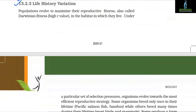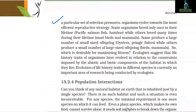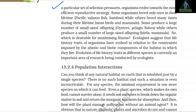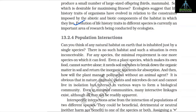Section 13.2.3: Life History Variation. Populations evolve to maximize their reproductive fitness — also called Darwinian fitness, or high r value — in the habitat in which they live. Under a particular set of selection pressures, organisms evolve towards the most efficient reproductive strategy. Some organisms breed only once in their lifetime, while others breed many times — most birds and mammals. Some produce a large number of small-sized offspring such as oysters and pelagic fishes, while others produce a small number of large-sized offspring such as birds and mammals. Ecologists suggest that life history traits of organisms have evolved in relation to constraints imposed by the abiotic and biotic components of the habitat.